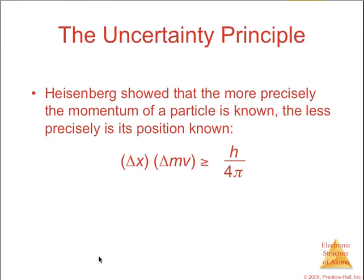Touching base on the uncertainty principle, Heisenberg showed that the more precisely the momentum of a particle is known, the less precisely is its position known. This relates to uncertainty.